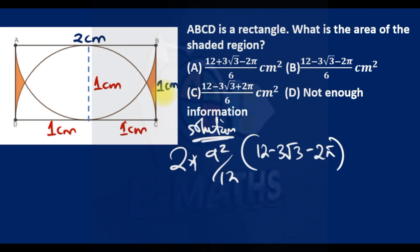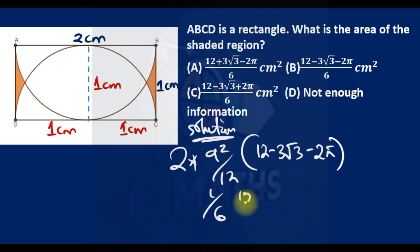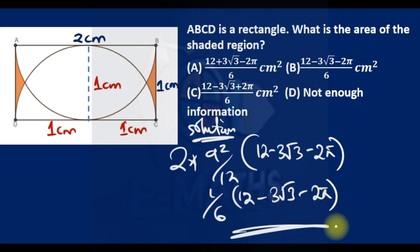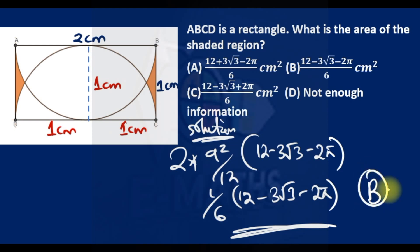Since our a is 1, this becomes 2 × 1/12 = 1/6 × (12 − 3√3 − 2π). So the answer is option B. It's just applying the previous concept — a very logical question.